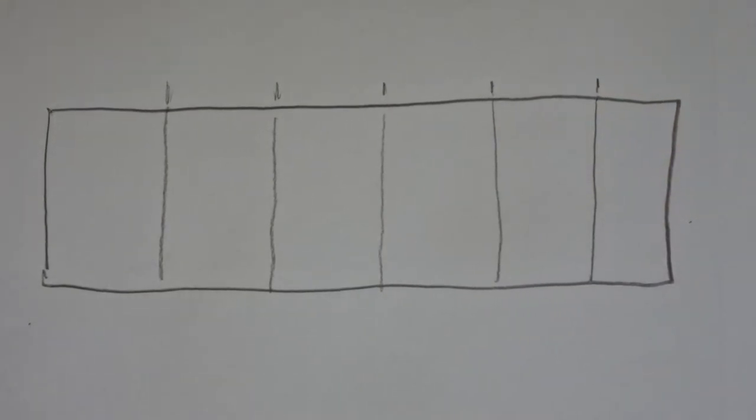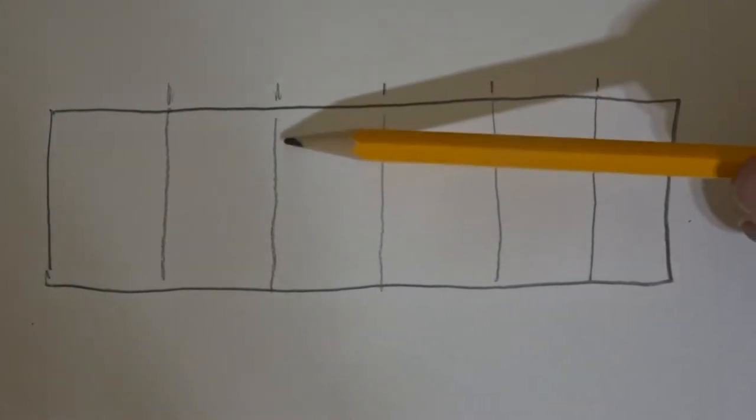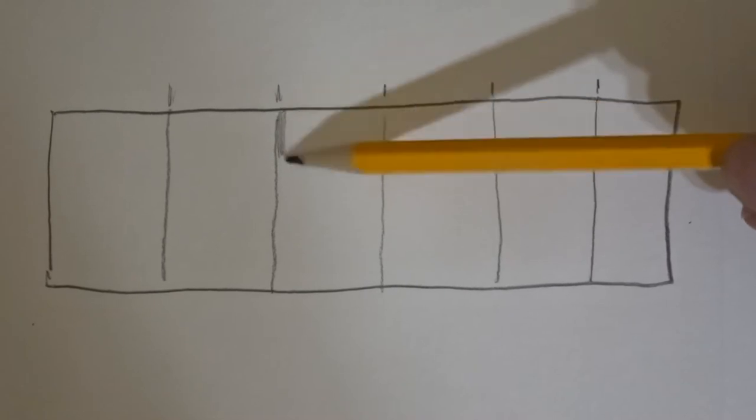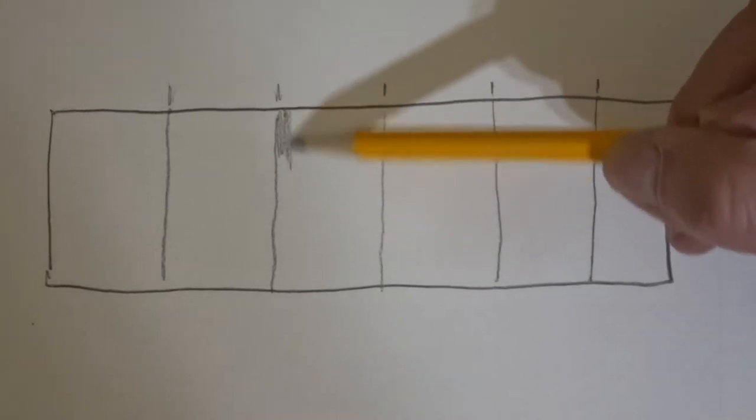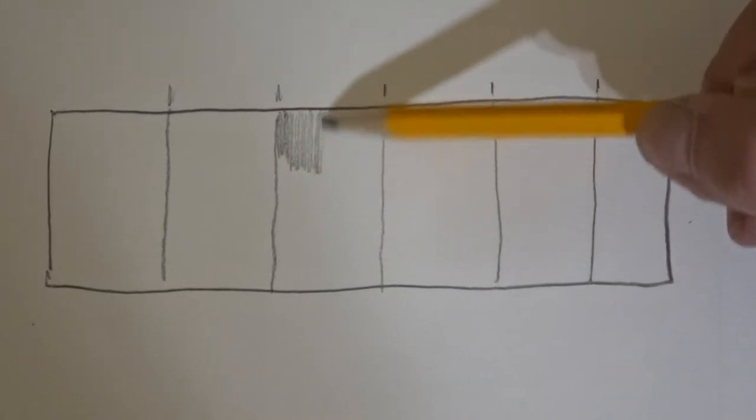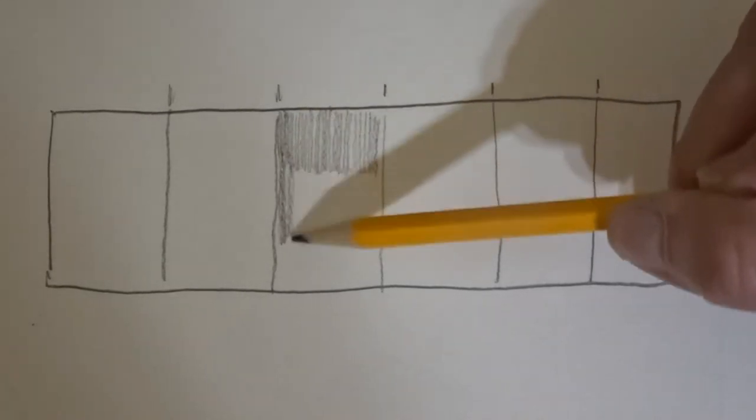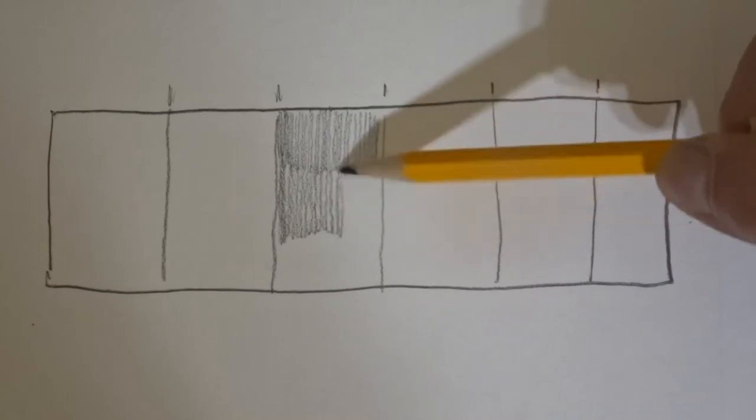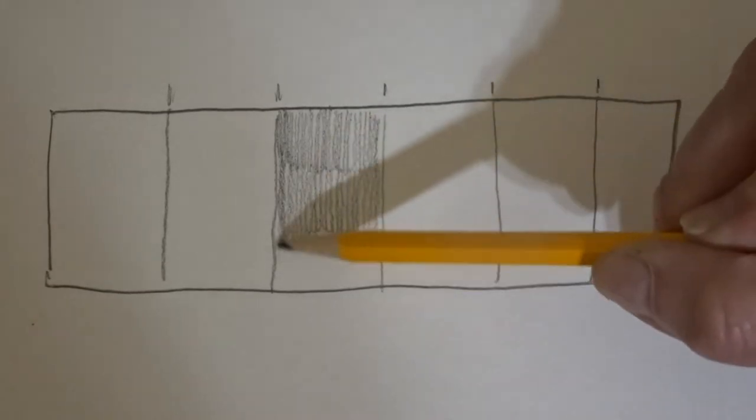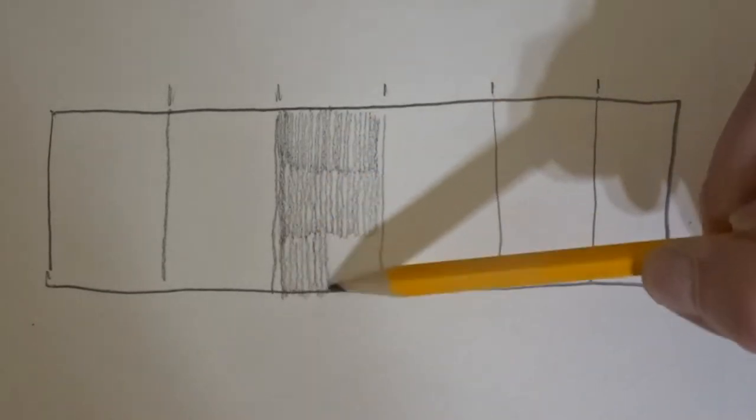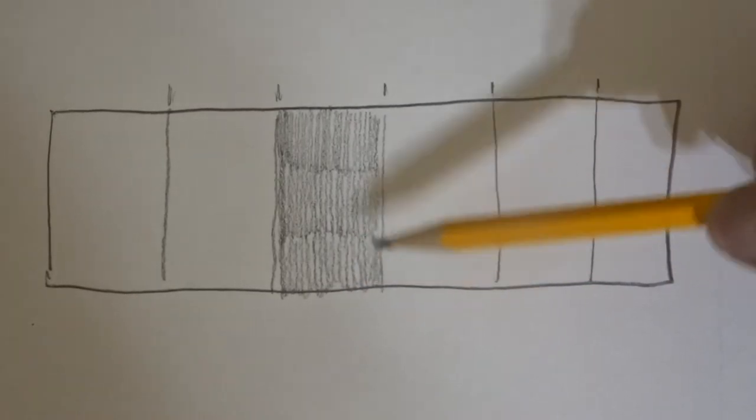So when I make my value scale, I usually go from white to black, and I usually start with the middle value. And the reason I do that is because it kind of gets me warmed up and able to control my pencil a little bit. If my fingers are stiff or my brain's not quite working, it relaxes me a little bit. You can always lighten or darken something when you start in the middle.